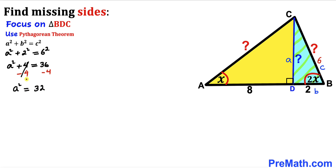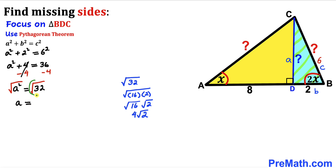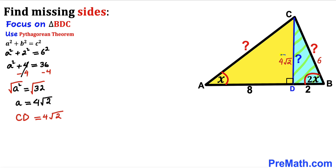Taking the square root of both sides, a equals the square root of 32, which simplifies to 4 times the square root of 2. So our CD length turns out to be 4√2 units.